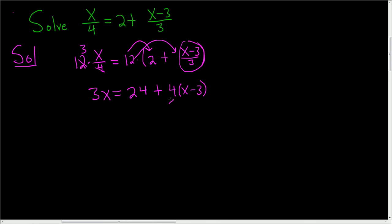It looks like we have to distribute this 4, so let's go ahead and do that. So 3x equals 24 plus 4 times x is 4x, and 4 times negative 3 is negative 12.